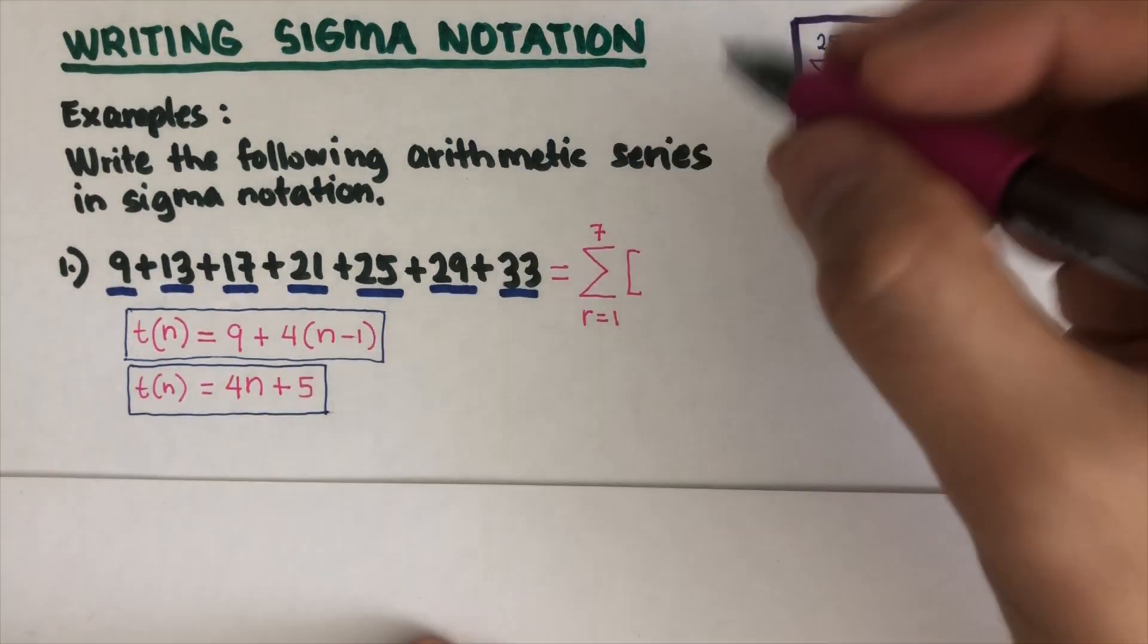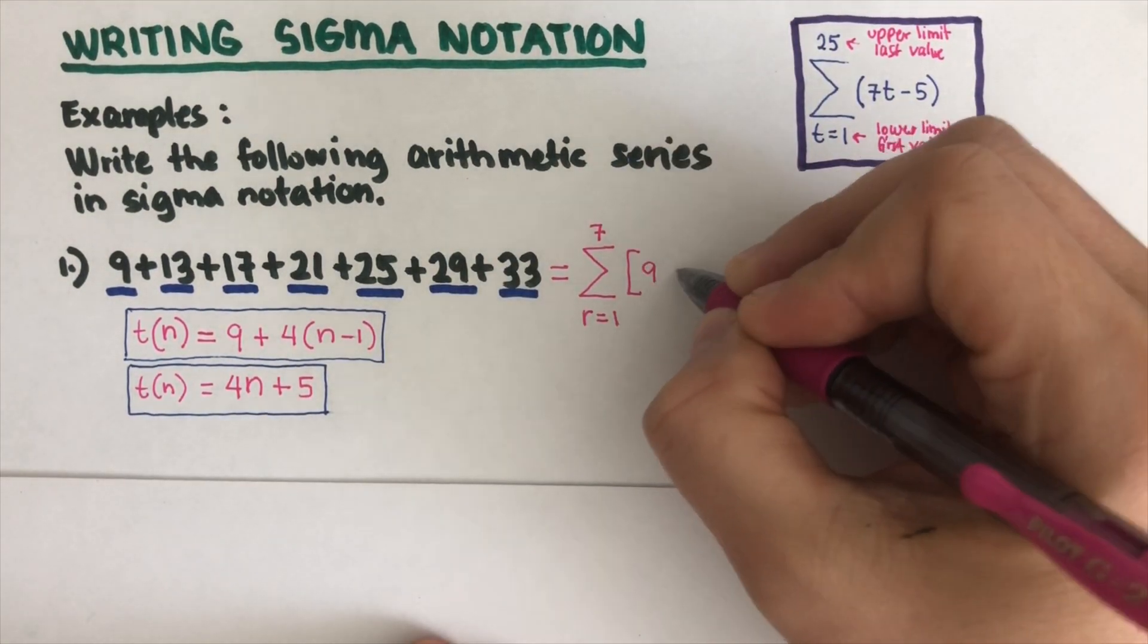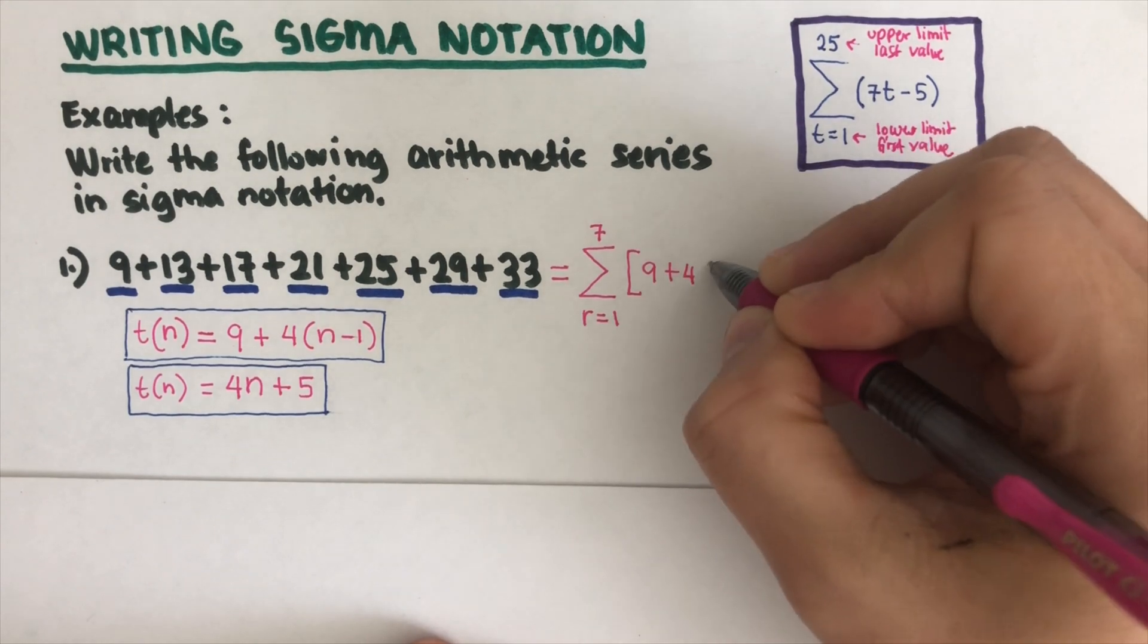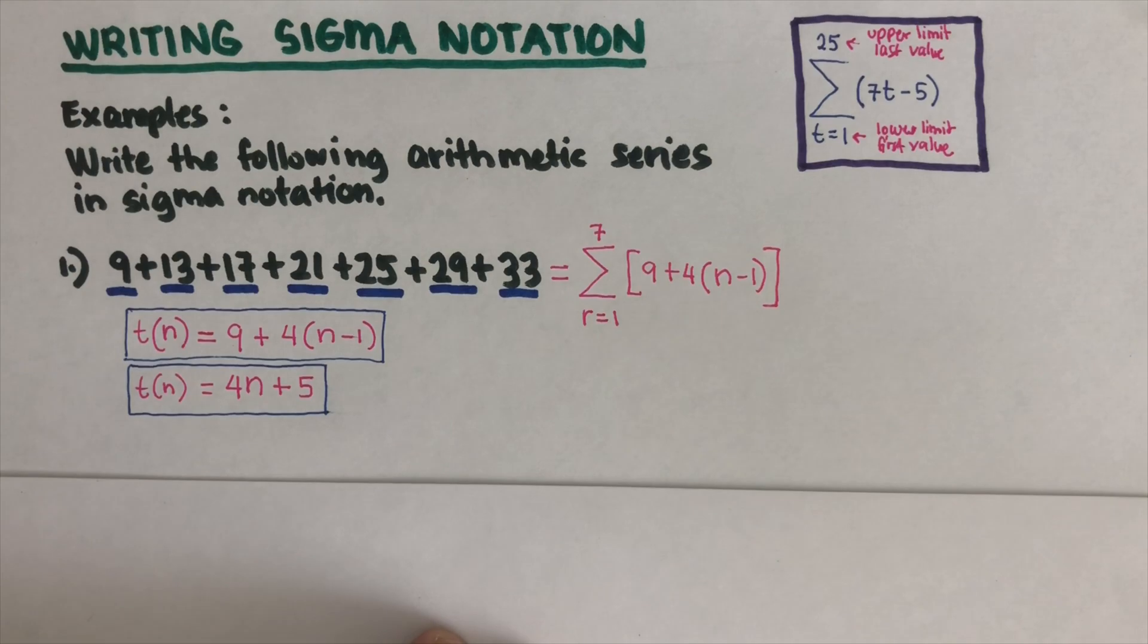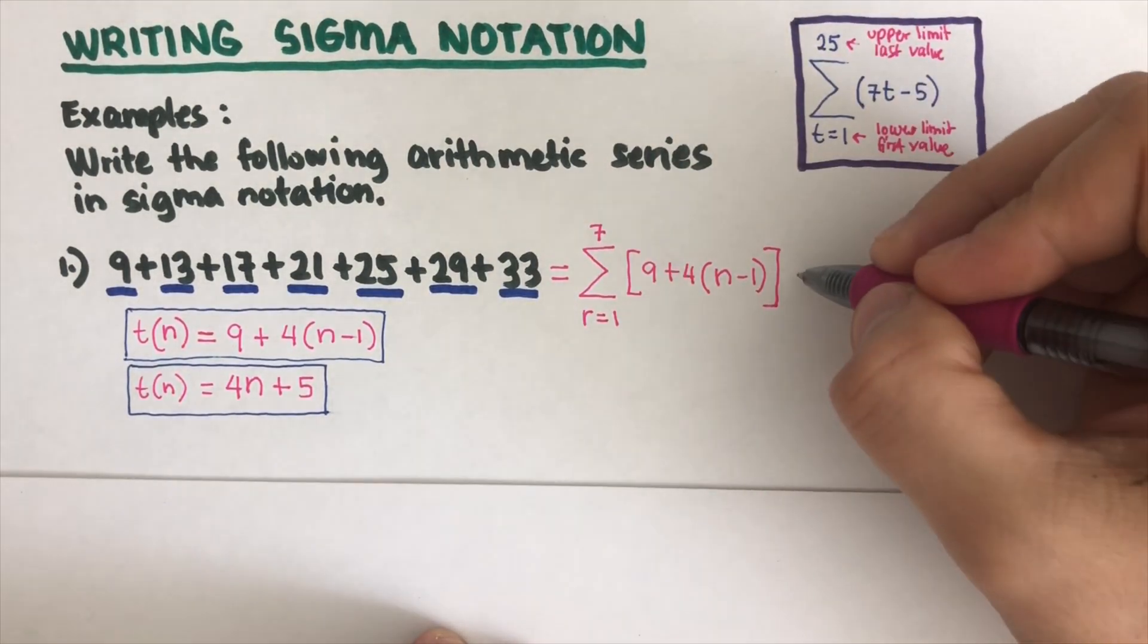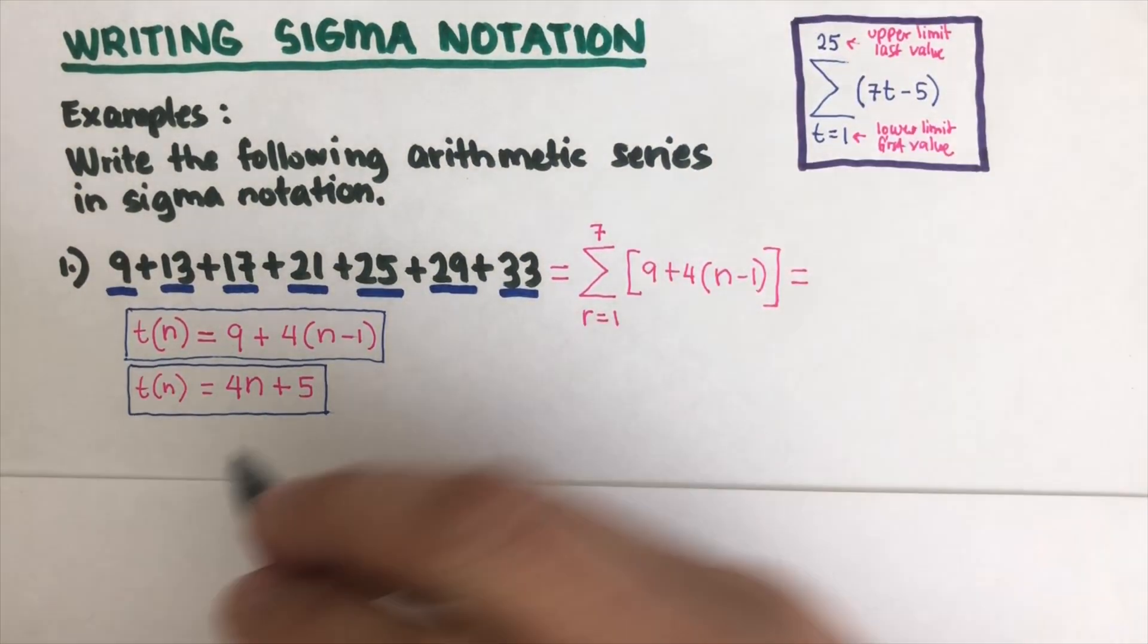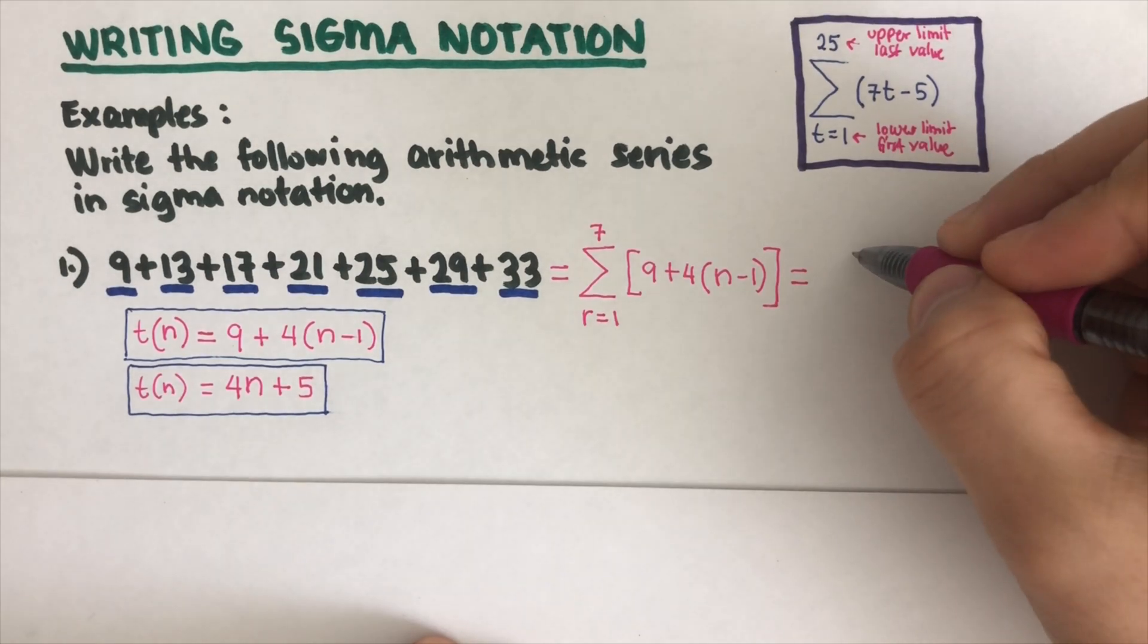So there are 7 terms. I put that on top and then the equation that we're gonna have here is the first one. That would be 9 plus 4 parentheses n minus 1. That's the first Sigma notation. The other way to do this is using the other equation.